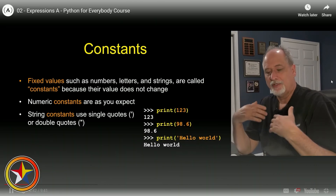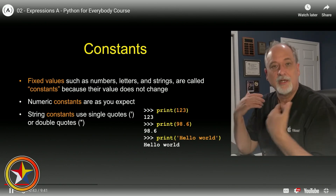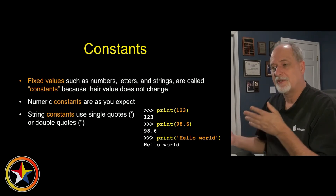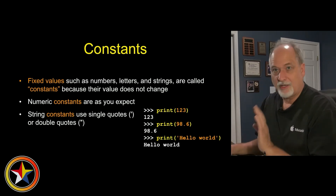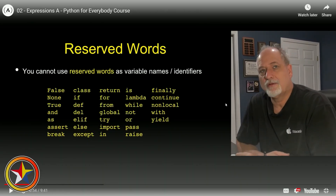You can kind of hear in his voice that he's a lot more relaxed - probably because he's not walking around campus. Print 123 prints out 123, print 98.6 prints it out. Without constants we can't really write much of anything.